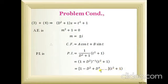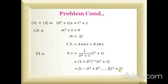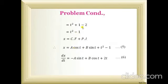Multiplying through: 1·(t² + 1) minus D²·(t² + 1). Now D(t² + 1) equals 2t, and D²(t² + 1) equals 2. The D³ and D⁴ terms are zero. So we get (t² + 1) − 2, which gives P.I. equals t² − 1.